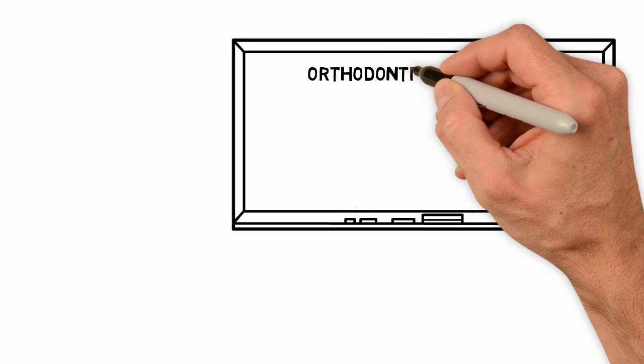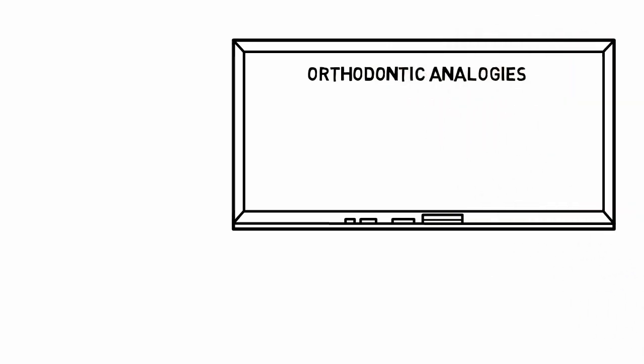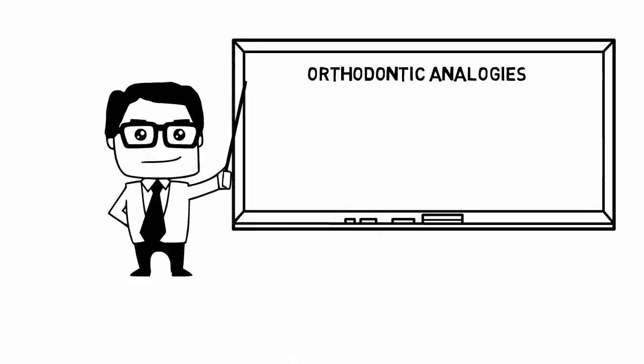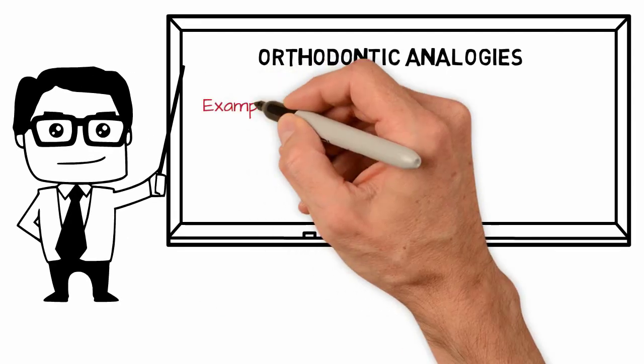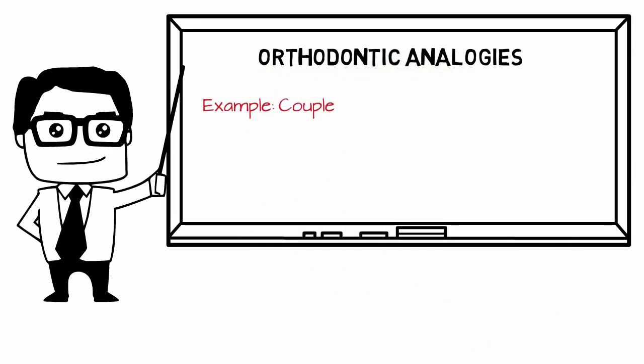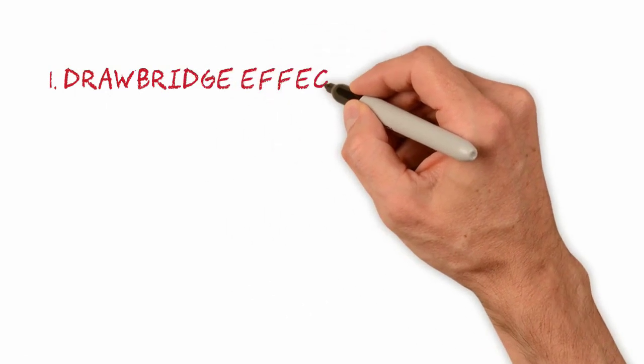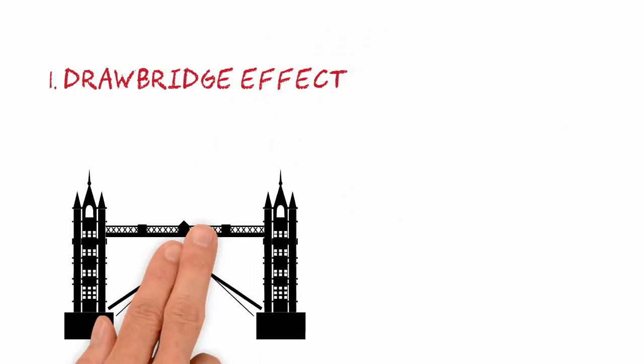The use of analogies in the teaching of orthodontic concepts is an excellent method for the retention and application of acquired knowledge. By comparing new information with a familiar situation, the transmission of scientific concepts becomes more effective and strengthens the learning process. The goal of this whiteboard animation is to present the five main analogies in orthodontics.